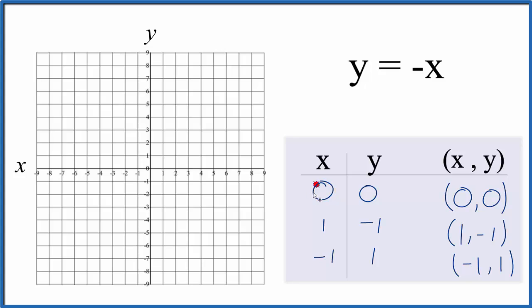So let's start by graphing x is zero and y is zero. We find x is zero right here and y is zero right here. That's our first point. Then we have x is one and y is negative one. So we go over one and then down to y is negative one, and we have our second point.